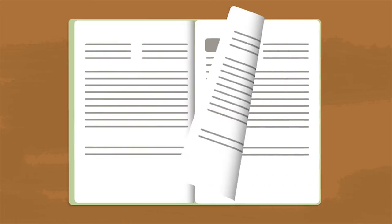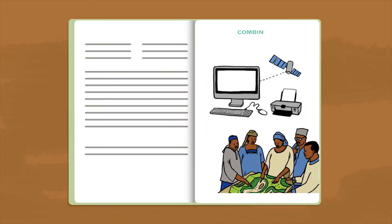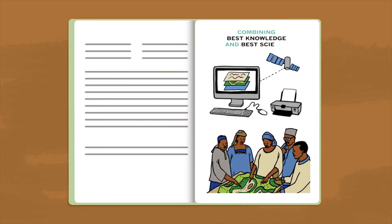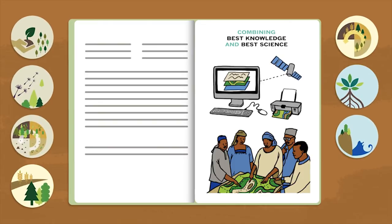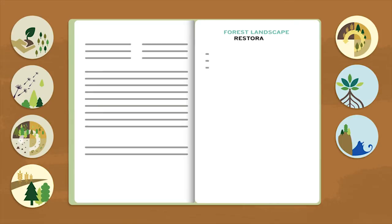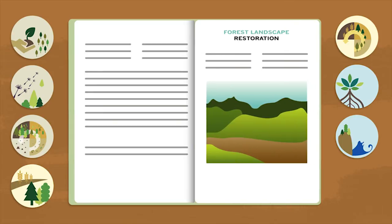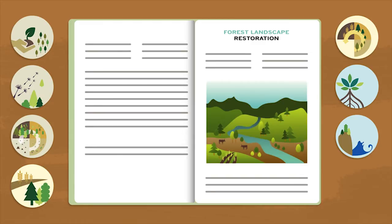ROAM can help countries, institutions and individuals identify the best places to begin restoration, as well as what strategies to employ in different regions. ROAM explains how these strategies can serve important goals for rural development, biodiversity conservation and food, energy and water security.